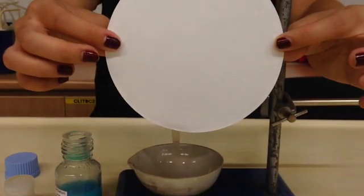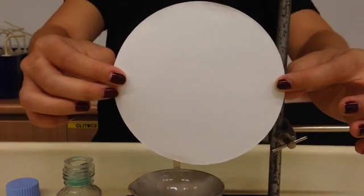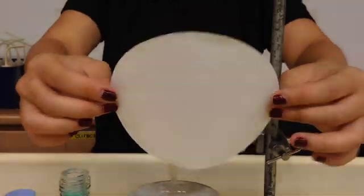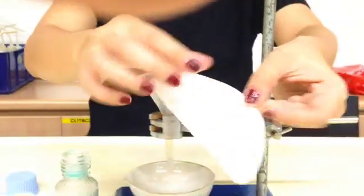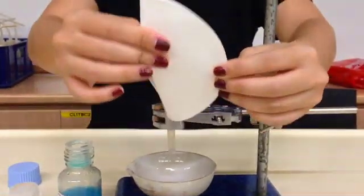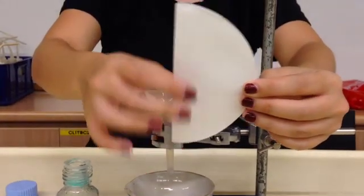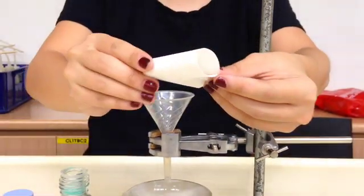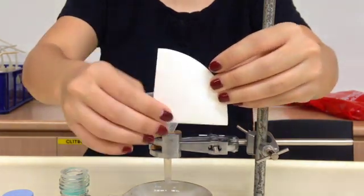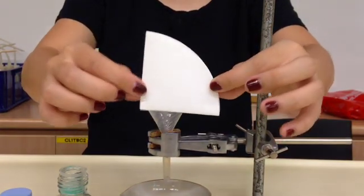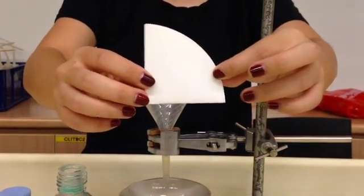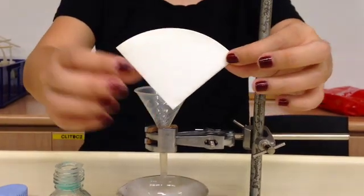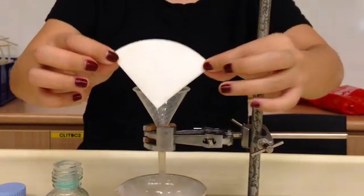So over here I have this piece of filter paper. The filter paper is round and some of you might not really be sure how to fold the filter paper, so firstly we fold it into half, then we fold it into a quarter. So your filter paper should look like this, a quadrant.